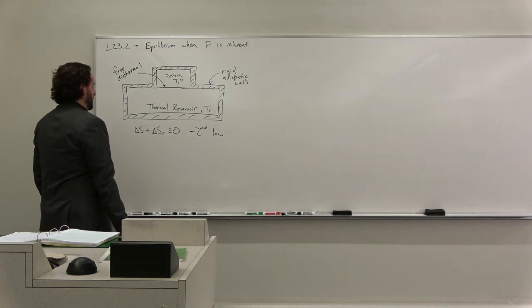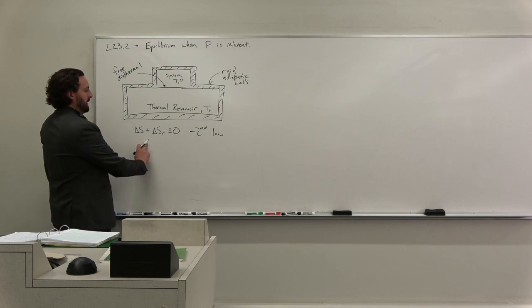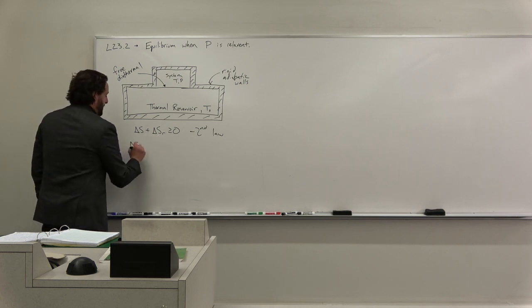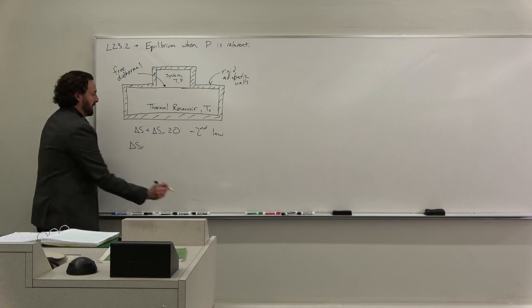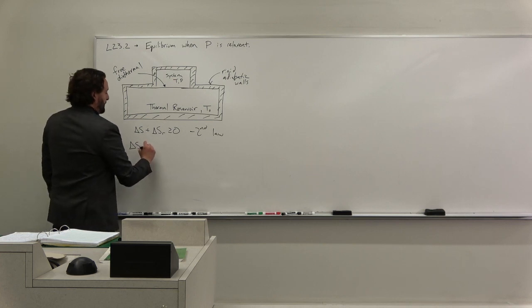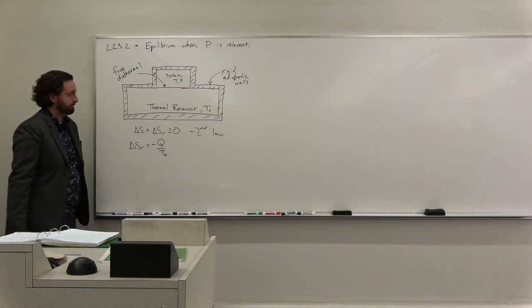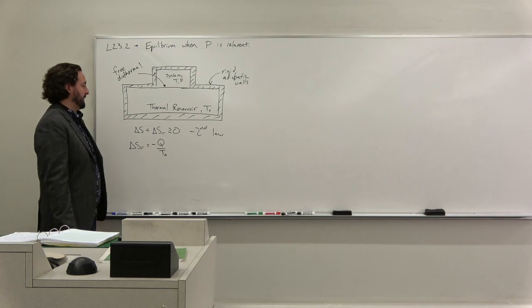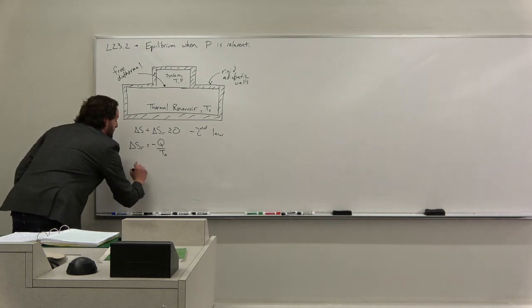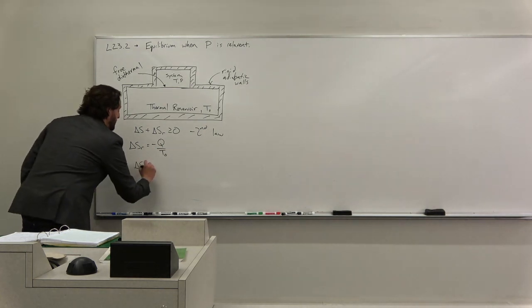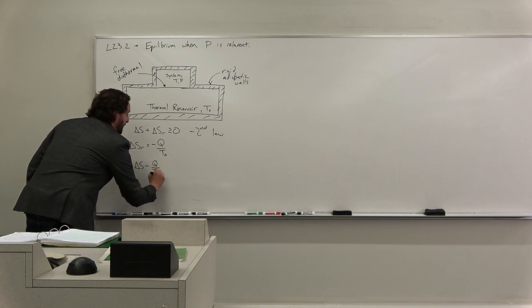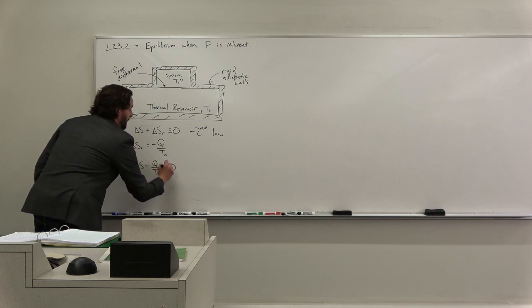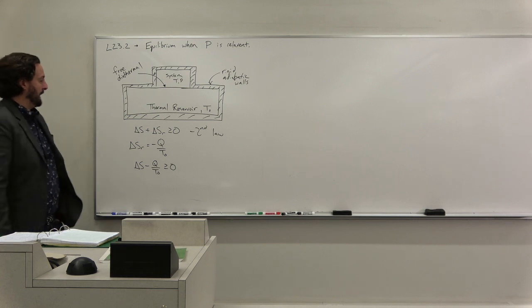So we're going to be maximizing our entropy. If we look at this term, delta S of the reservoir is, again, simply minus Q over T0, because it's a constant temperature, all we need to know is the heat that flows out. And so we can say that delta S minus Q over T0 is greater than or equal to zero.